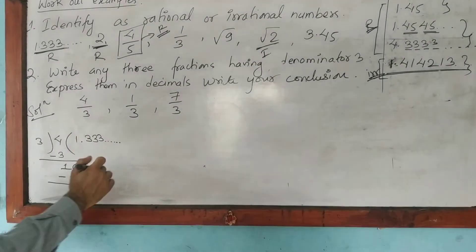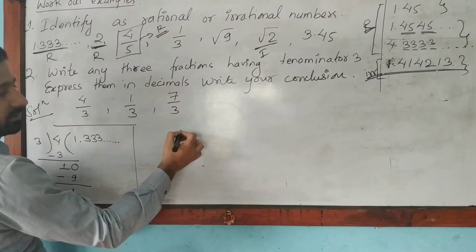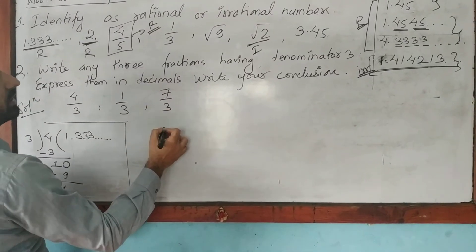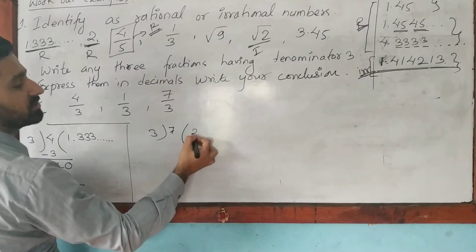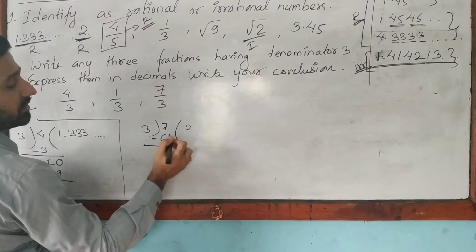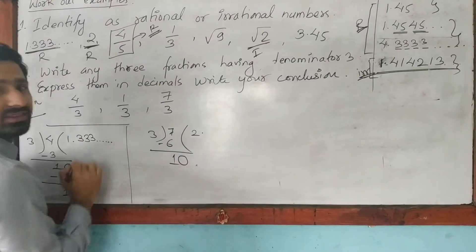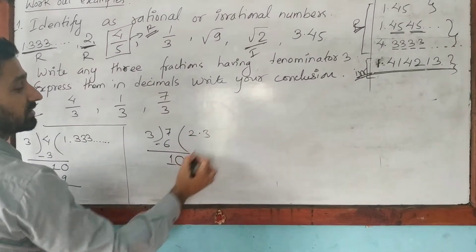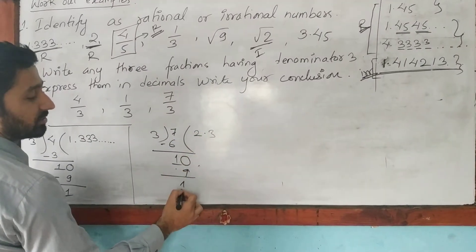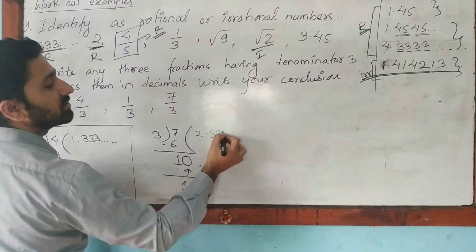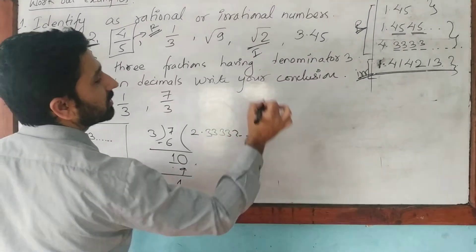Let's move to the third fraction. It is 7 divided by 3. Look, 3 into 2 is 6. Again the remainder is 1. When we introduce a decimal, it becomes 10. Then again 3 into 3 is 9, again the remainder is 1. Follow the same process. It will be 2.333 and so on.